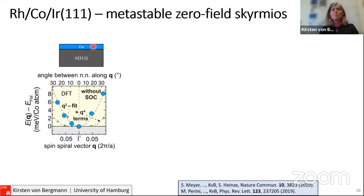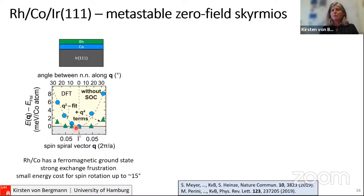Our theory colleagues calculated not iron but cobalt on iridium and found that if you vary the nearest-neighbor angle you normally pay an energy penalty — zero degrees is the ferromagnetic ground state with a quadratic behavior, just as in the micromagnetic model. However, they found that adding a layer of rhodium on top changes this dramatically: there is a very flat dispersion, meaning that varying the angle by up to about 15 degrees costs no energy. This comes from strong exchange frustration.